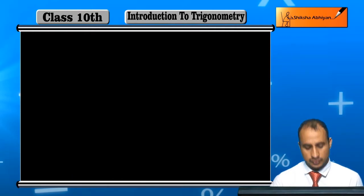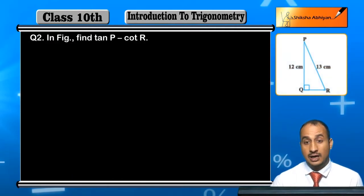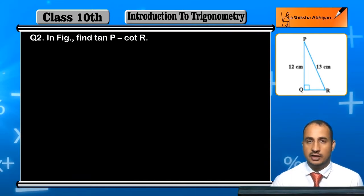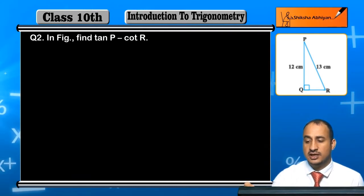Now students, see question two. The question is: in figure, you are given a figure which is a right triangle PQR, with the right angle at Q which is 90 degrees. Find tan P minus cot R. You need to find the value of tan P minus cot R. So let's see how we will solve this.